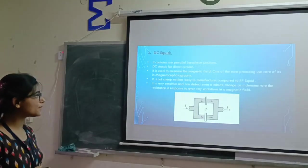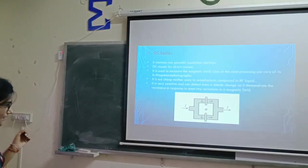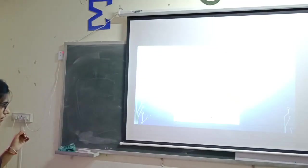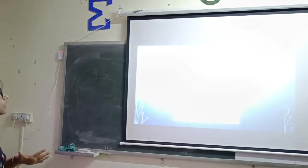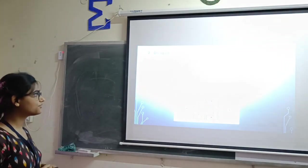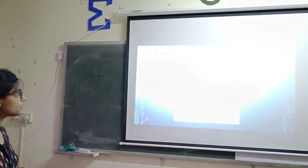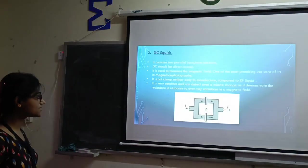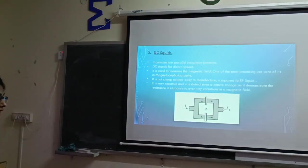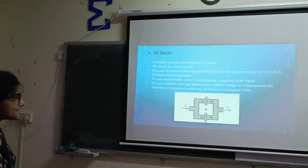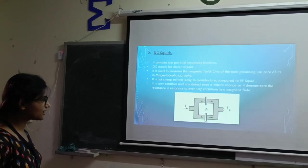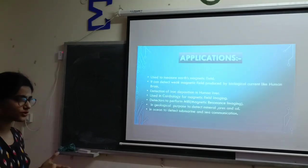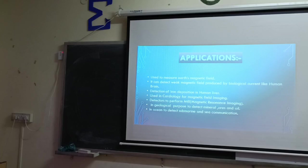DC squid contains two parallel Josephson junctions. This is superconductor, insulator layer, superconductor. It is used to measure the magnetic field. One of the most promising applications is magnetoencephalography. It is not cheap or easy to manufacture compared to RF squid. It is very sensitive and can detect even a minute change.